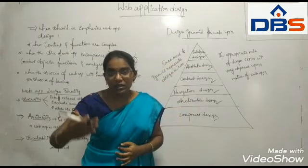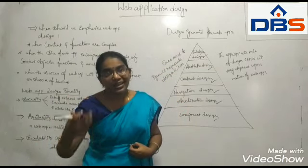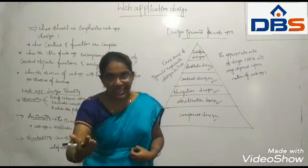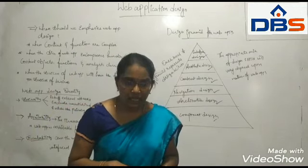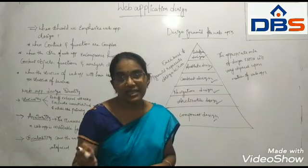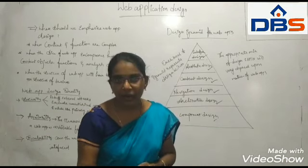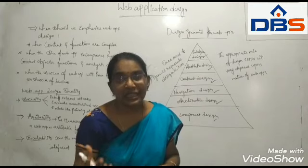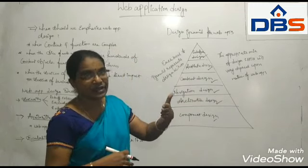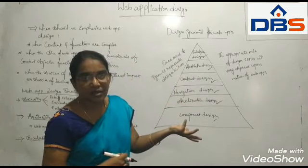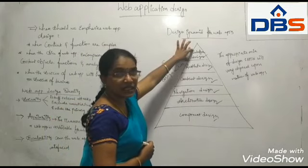The first one is interface design. One interface should be there between the user and the company, so that the user can communicate very easily. For example, the operating system acts as an interface between the user and the hardware. We are the user, we have to interact with the hardware. We can interact with the hardware using the operating system — the operating system acts as the interface, we can say it as the third person. This is the basic thing in interface design.